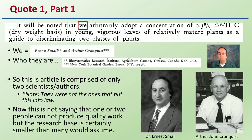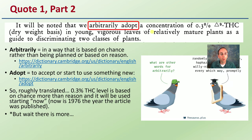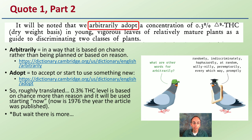So 'we' is referring to two scientists. Then part two: 'we arbitrarily adopt.' Seeing the word 'arbitrarily' in a scientific article can be a little concerning. Arbitrarily means in a way that is based on chance rather than being planned or based on reason, and 'adopt' is to accept or start to use something new. So roughly translated, the 0.3% THC level is based on chance more than reason, and will be used starting now — 1976, the year the article was published.